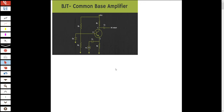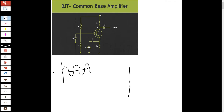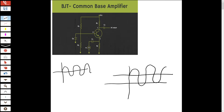Hello everyone. Today I will talk about BJT common base amplifier — its DC and AC analysis. The total response will be the summation of DC and AC. We will apply a small signal from the emitter side, and it will be amplified and swing around the DC value.